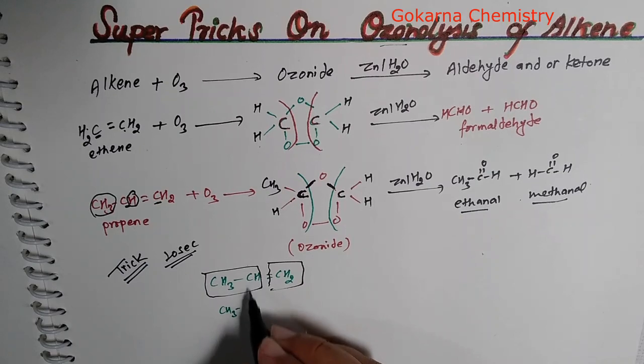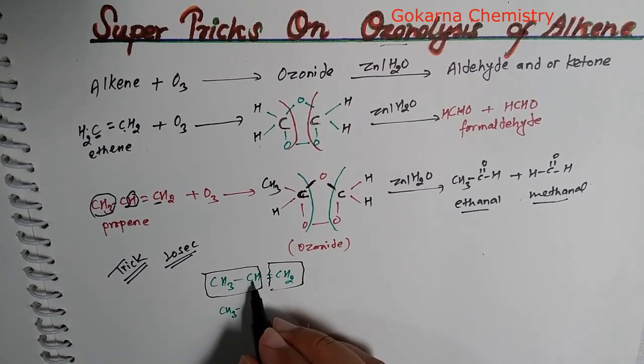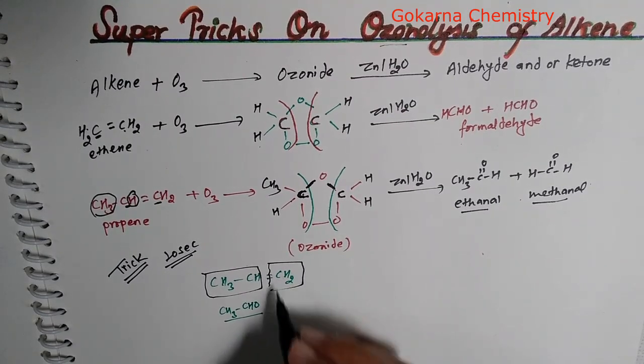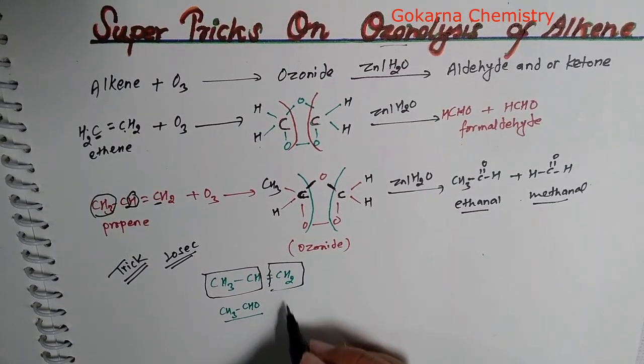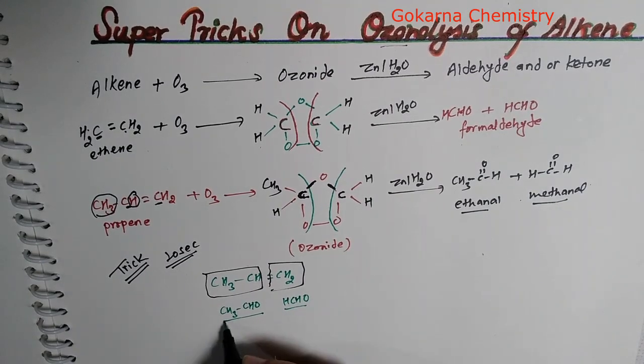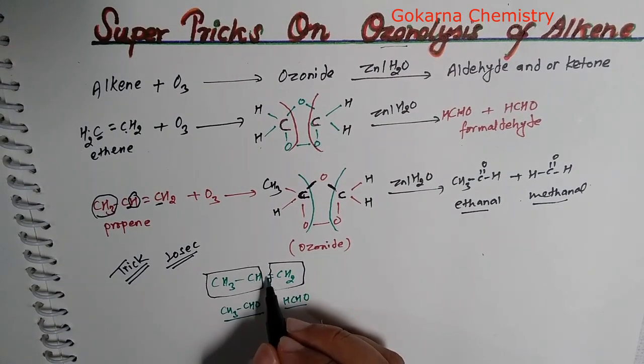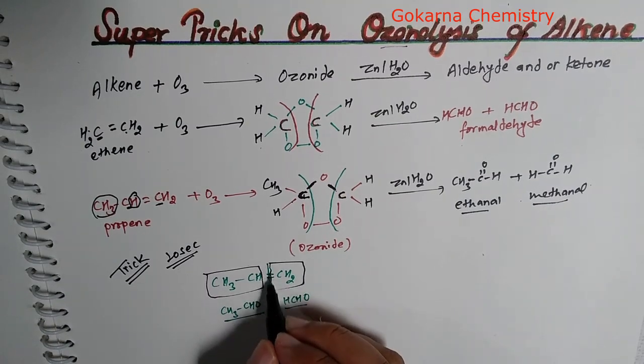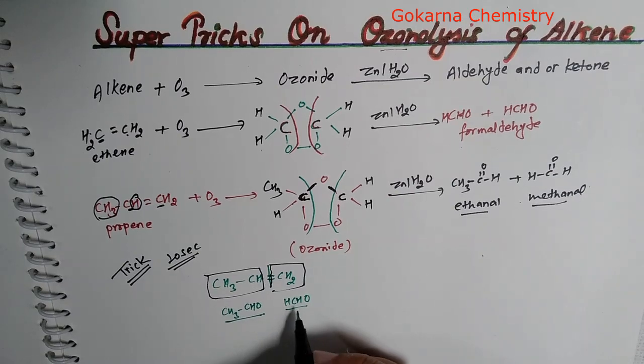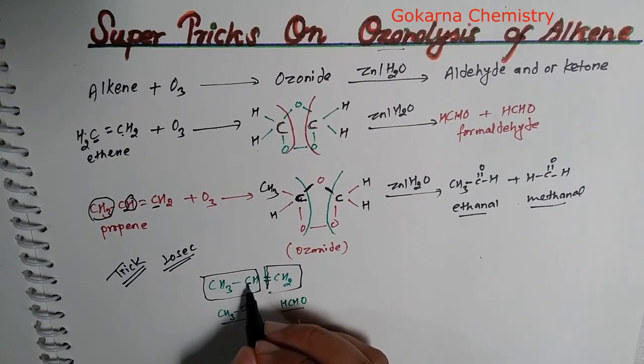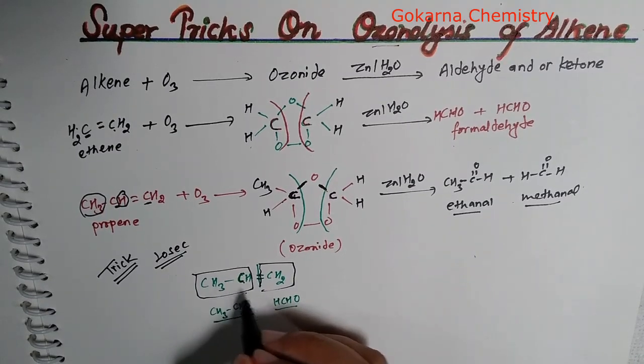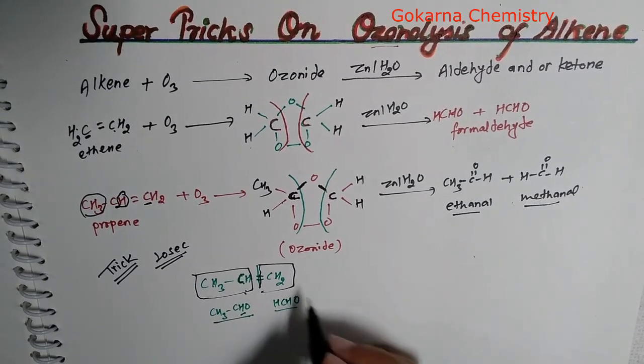CH3 becomes carbon double bond oxygen. This carbon forms aldehyde or ketone. If there's hydrogen, aldehyde formation occurs. If there are two alkyl groups, it's ketone. So this is our trick: we break the double bond and add oxygen to each carbon.